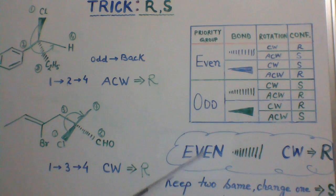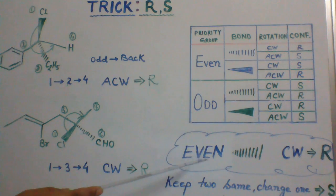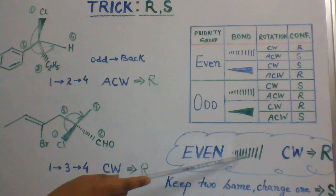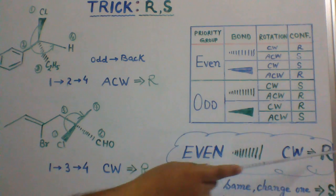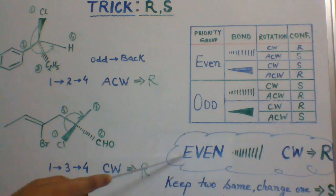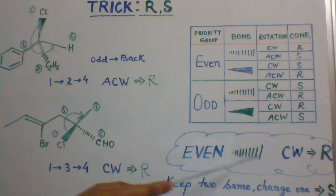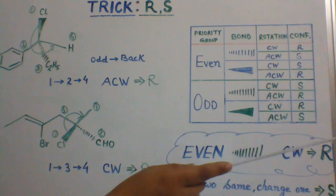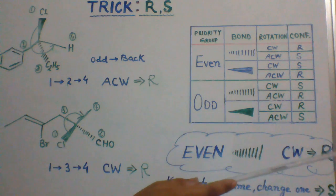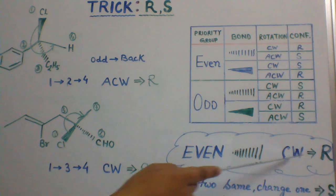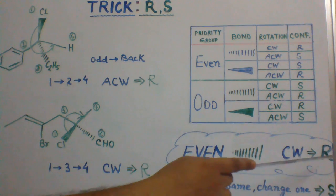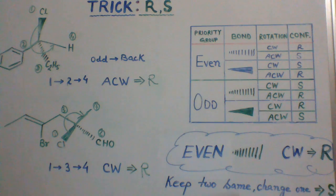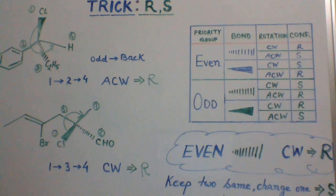Once again, you just have to remember: even, thin line, clockwise, R. If you change any one of these, it turns into S. If you change any two, it turns into R. If you change all three, it turns into S. Hope this video was helpful to you. Thank you.